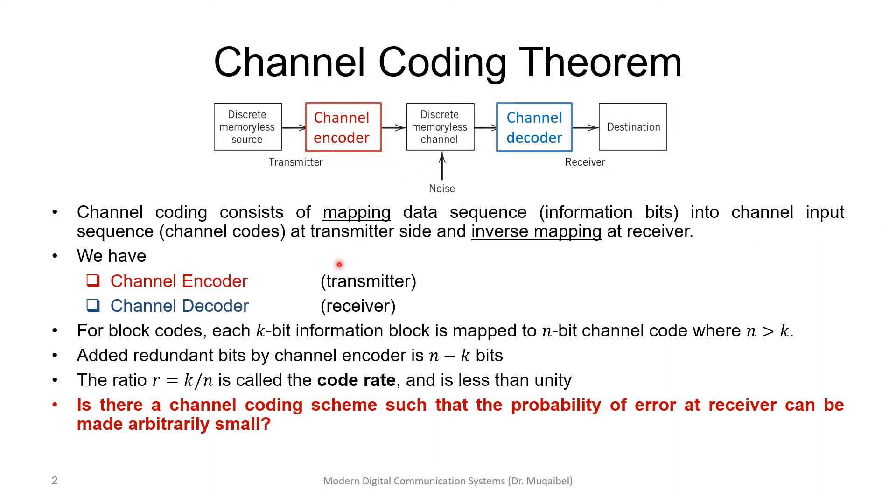We do the inverse mapping, which we call channel decoding, at the receiver side. So we have a channel encoder at the transmitter side and a channel decoder at the receiver side.